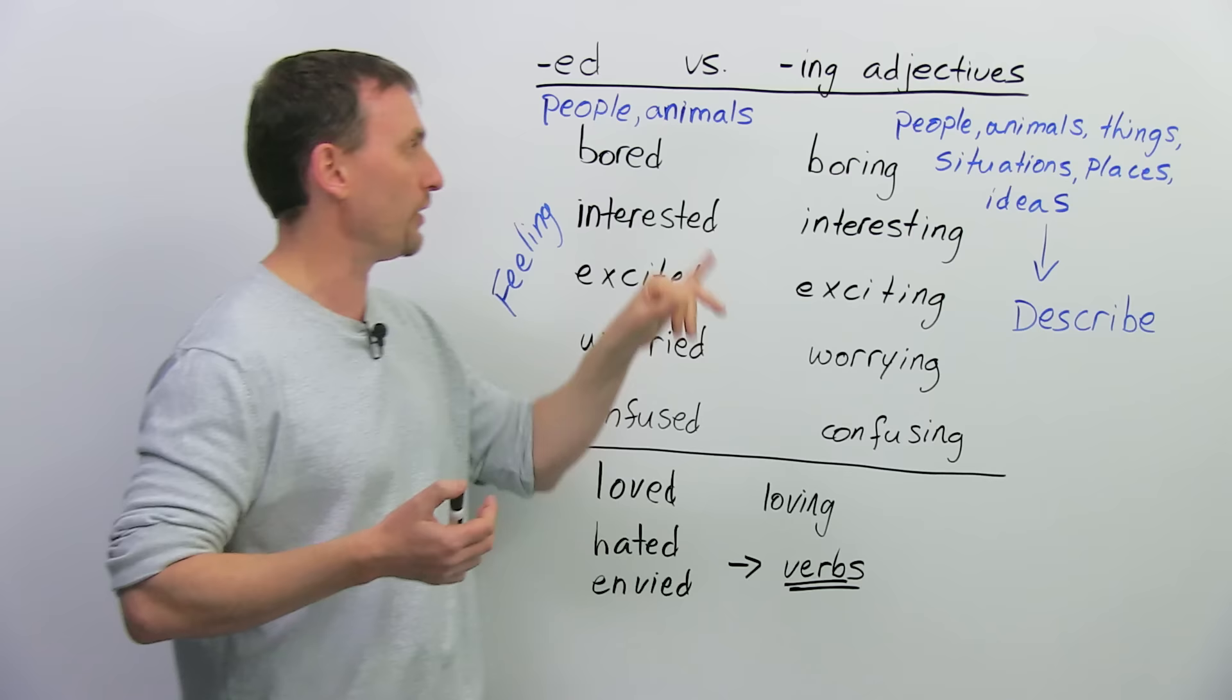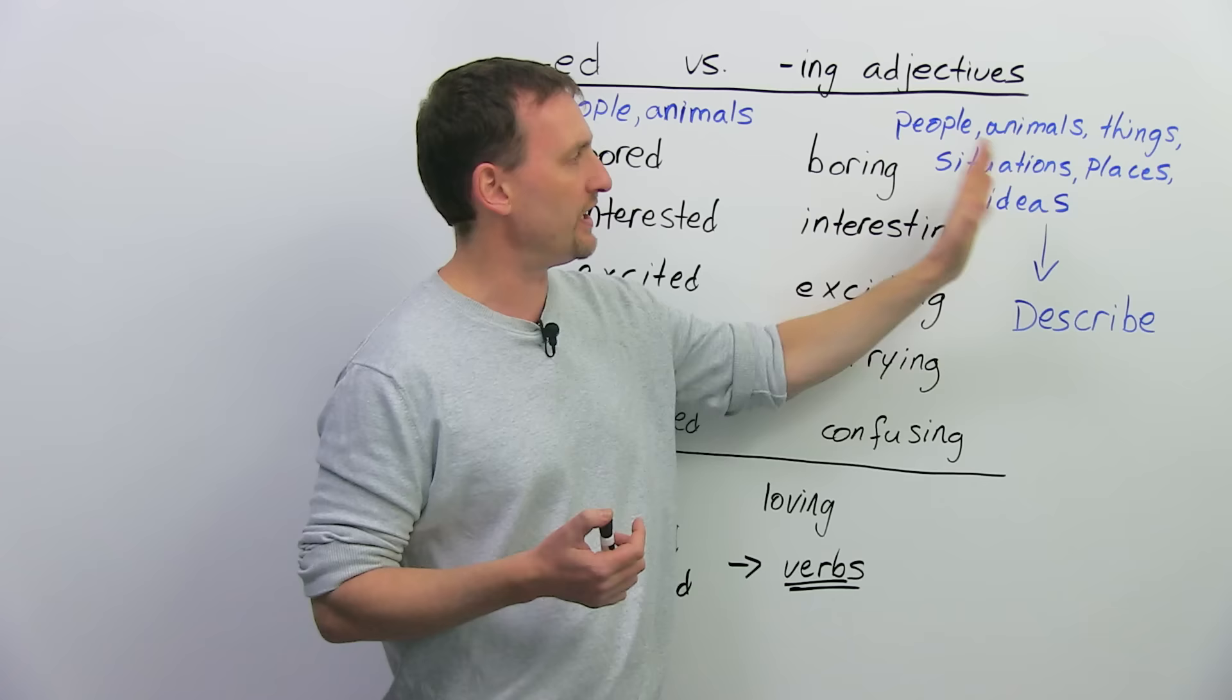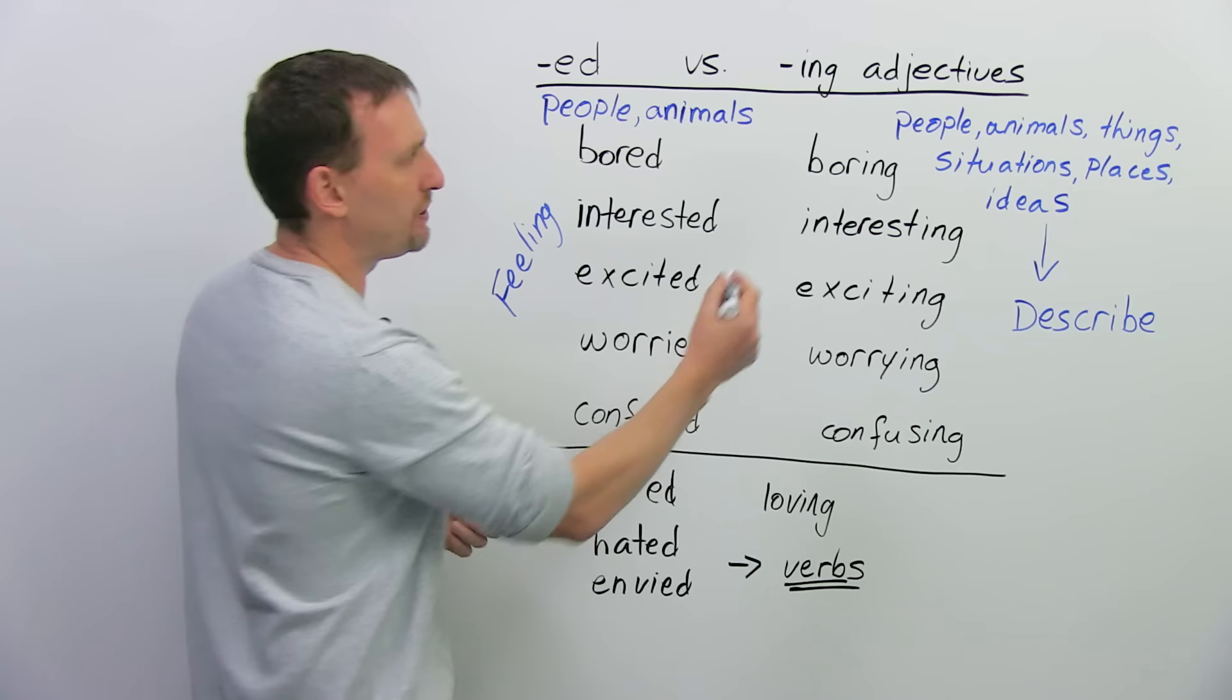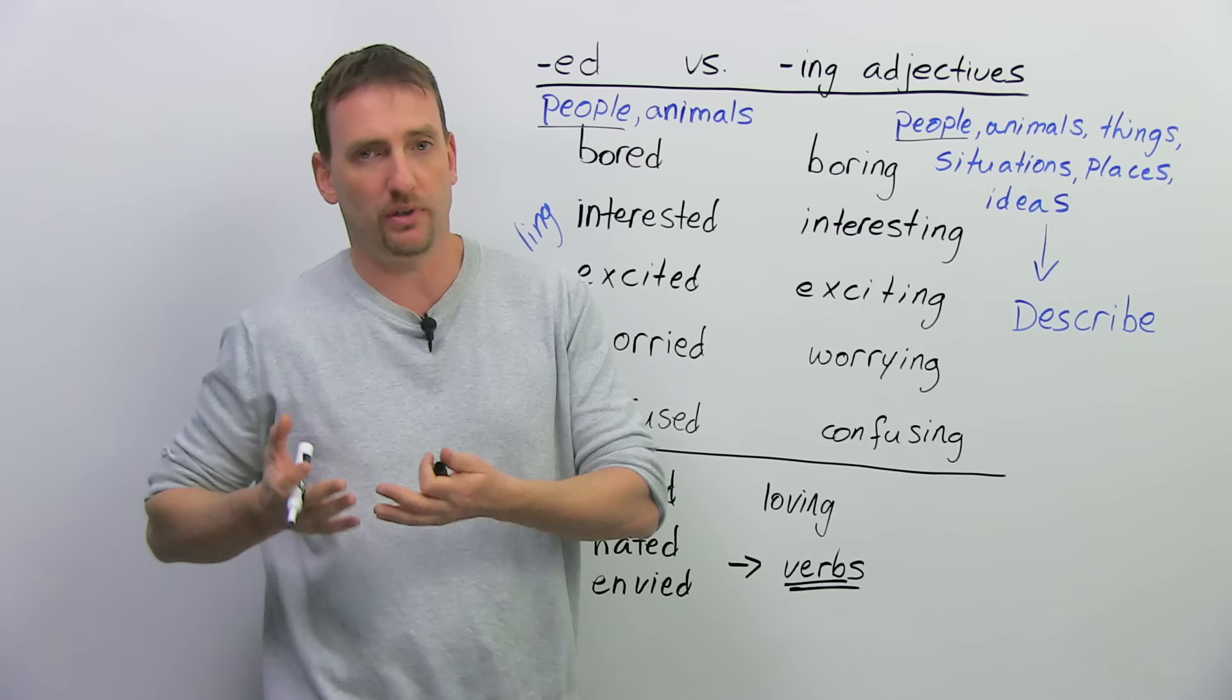Only people and animals for the -ed, and for the -ing, you can use people, animals, things, situations, places, ideas, basically any noun, because you're describing them. You're describing how they make people feel. So now you're wondering, well, I have people here and I have people here. So how can I use boring for people and bored for people?